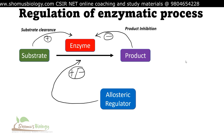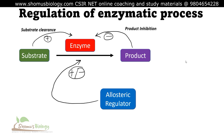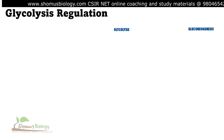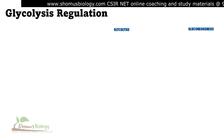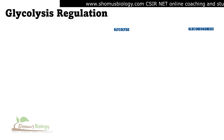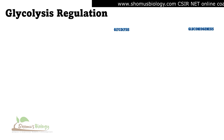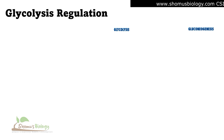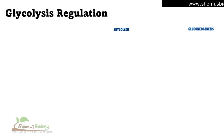Glycolysis and gluconeogenesis follow the same set of reactions with very similar enzymes. Only three different reaction stages exist where glycolysis differs from gluconeogenesis — that is step number one, step number three, and step number ten. In these three different reactions, glycolysis and gluconeogenesis are each being regulated in distinct ways.